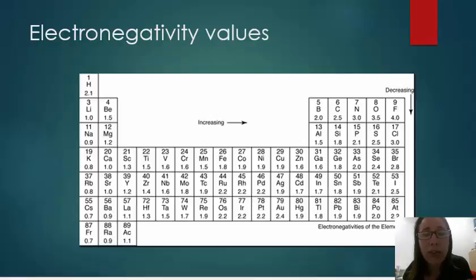In your textbook, you have a ranking of electronegativity values. And the higher the number is, the more electronegative the atom is. And we see that these electronegativity values increase as we go from left to right across a period, and decrease as we go down a family.